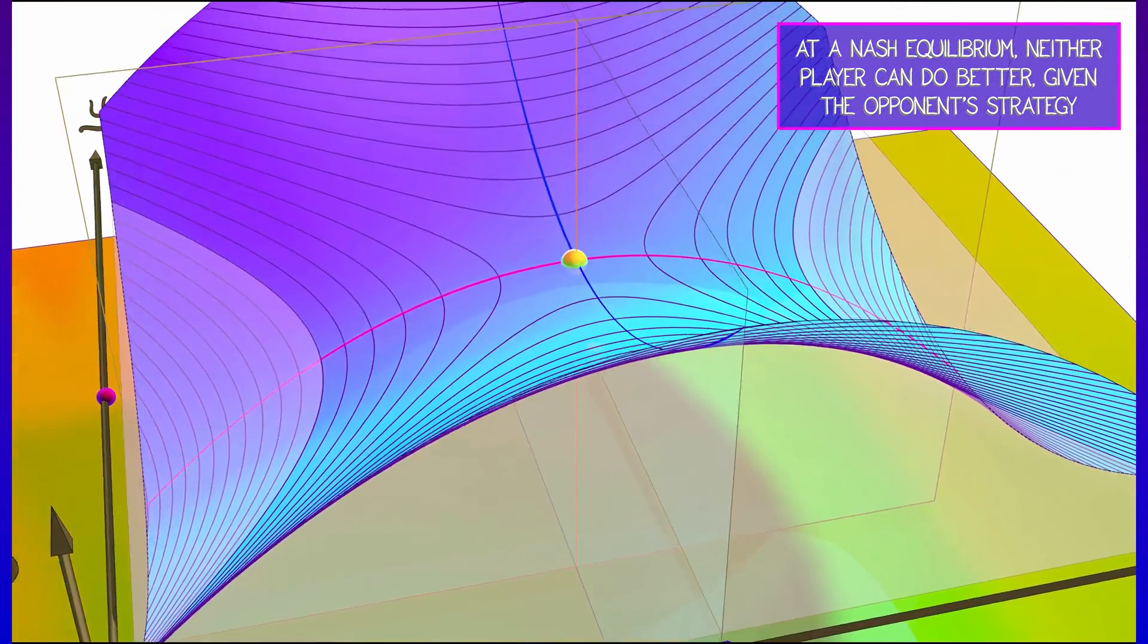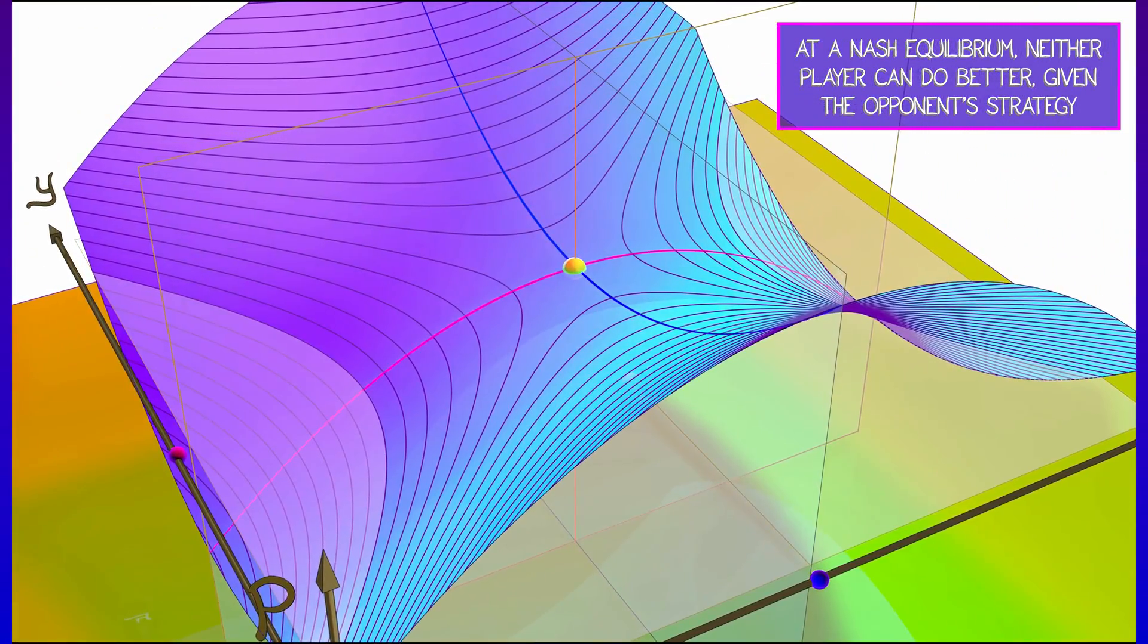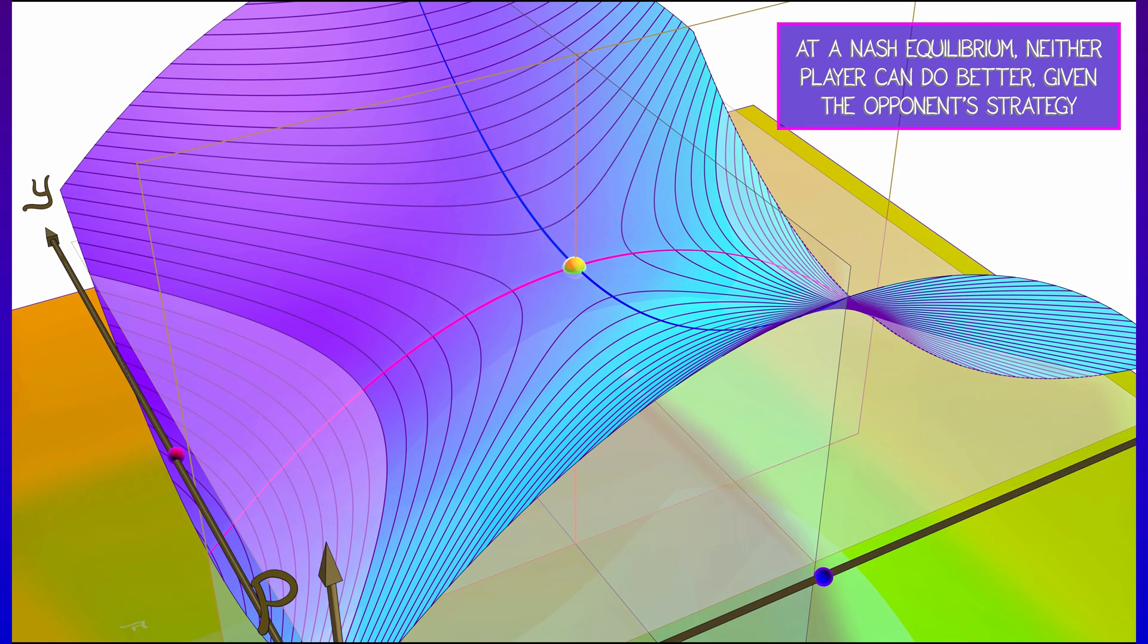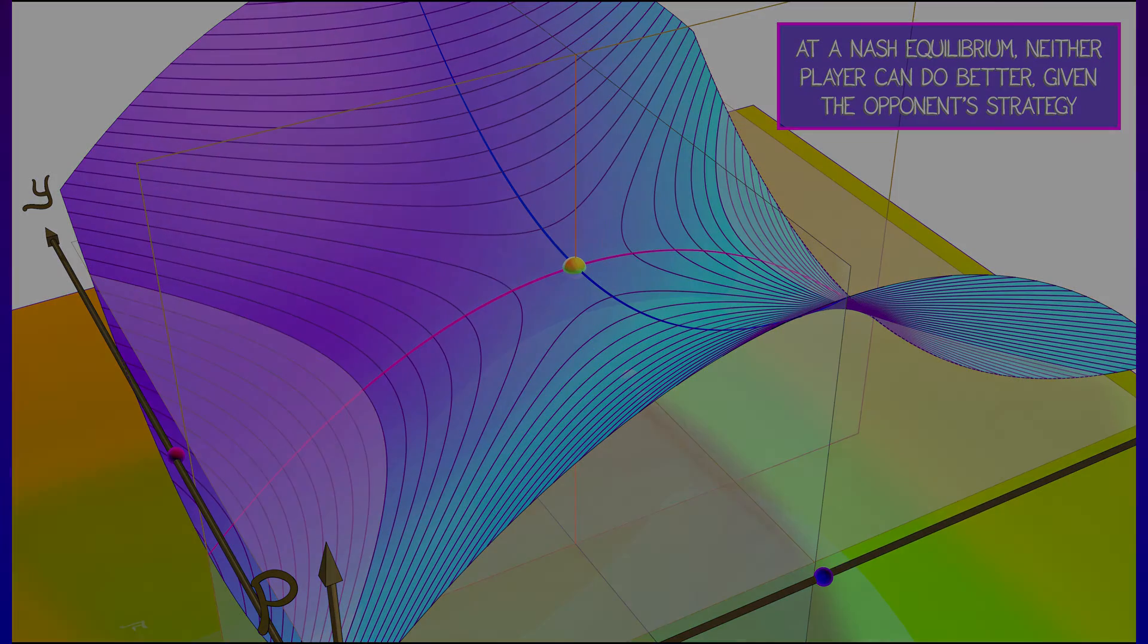What this means is that player one has maximized winnings and player two has minimized losses. That's what a Nash equilibrium is. That's what a saddle point is good for.